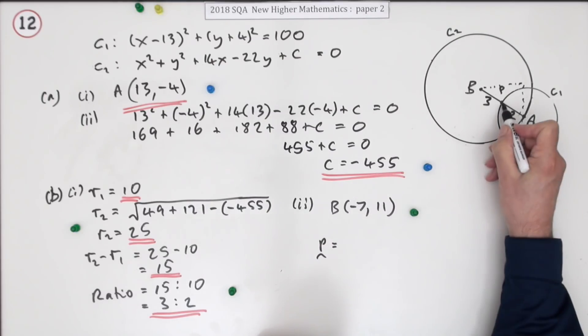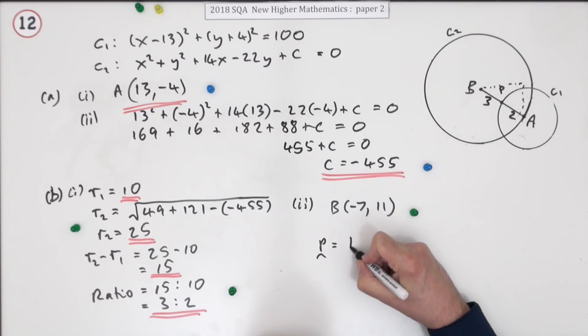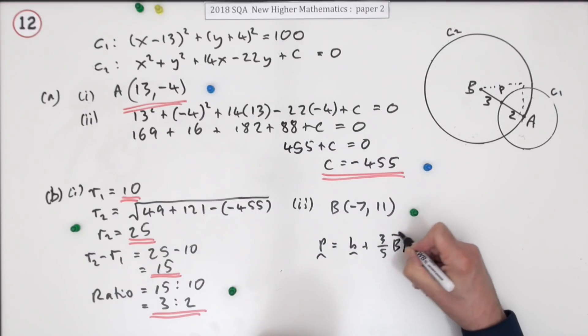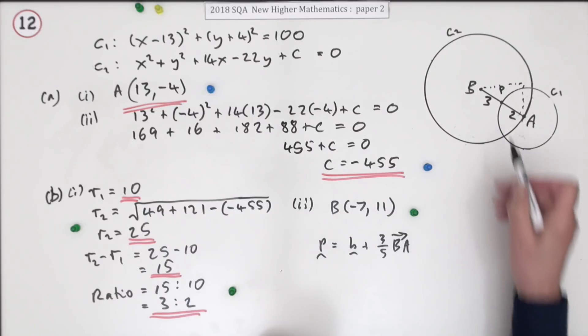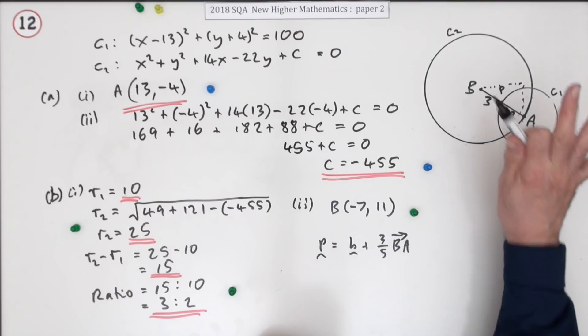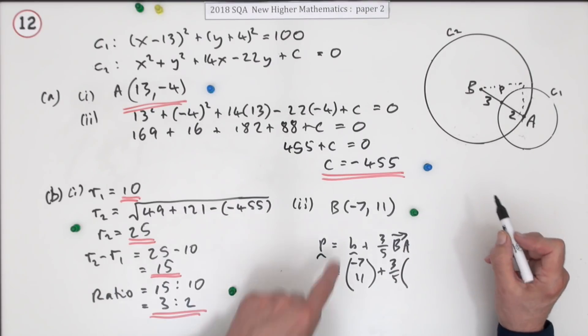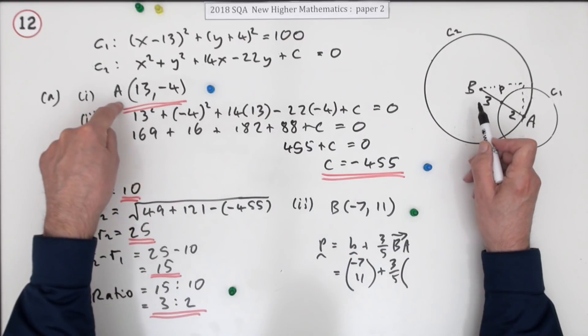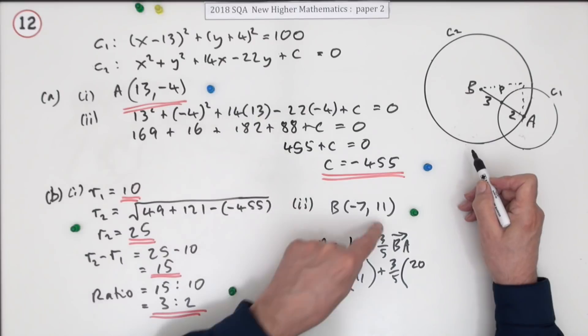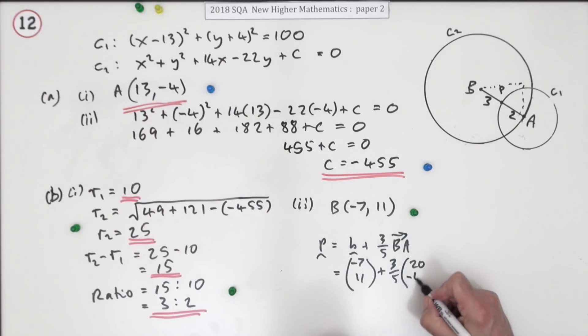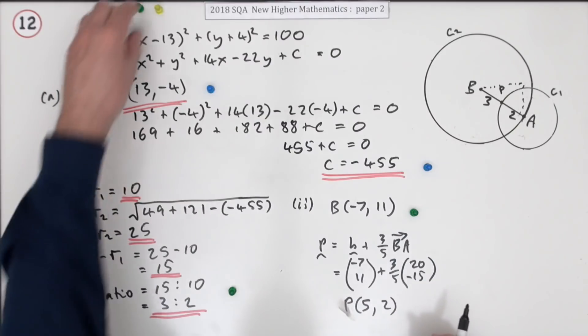To get to P, you start at B and add on three-fifths of BA. Starting at negative 7, 11, and doing three-fifths of the displacement: you're going from negative 7 to 13, so that's 20 along. You're going from 11 to negative 4, so that's 15 down. Three-fifths of 20 is 12, so 12 on from negative 7 is 5. Three-fifths of 15 is 9, so that's 2. P is at the point (5, 2) for the mark.